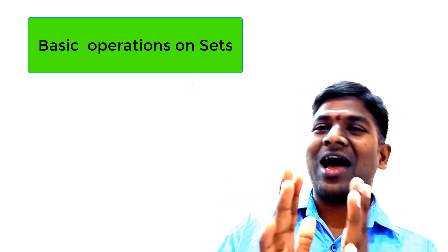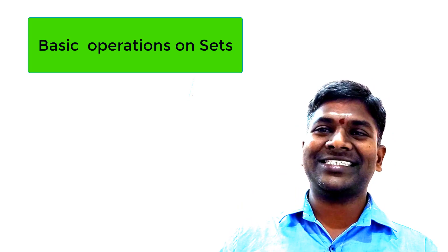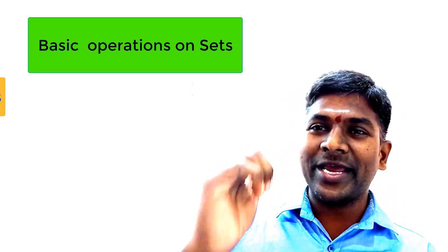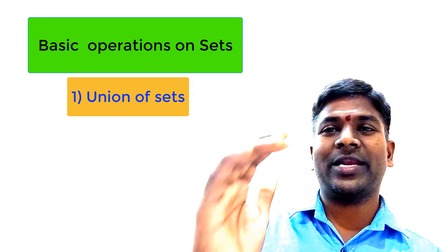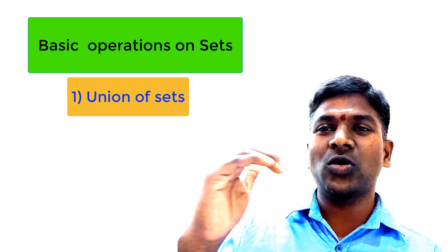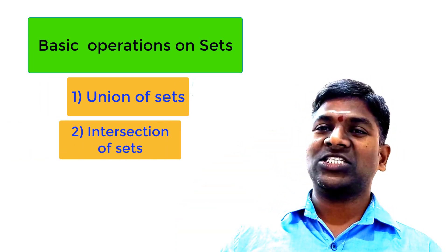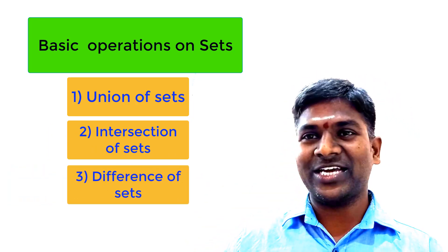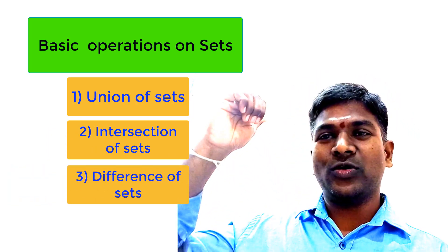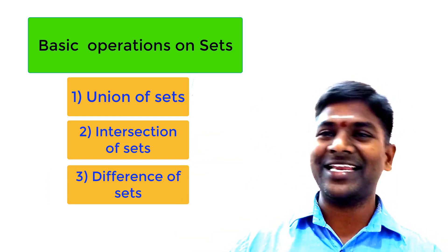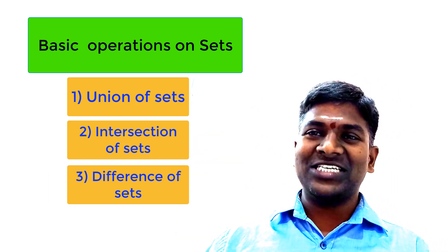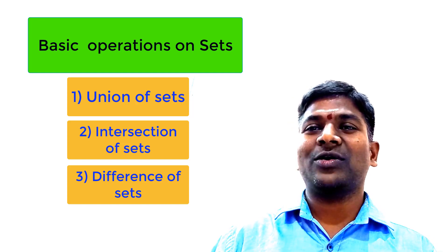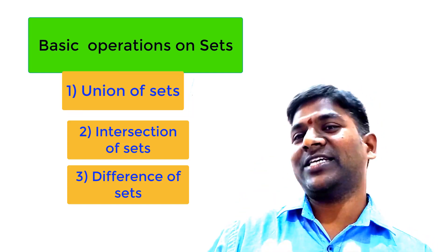Here, some particular operations can be done on sets. They are: number one, union of sets; number two, intersection of sets; and number three, difference of sets. You can see those three operations on the screen. Today, let us discuss the first operation on sets, that is union of sets.